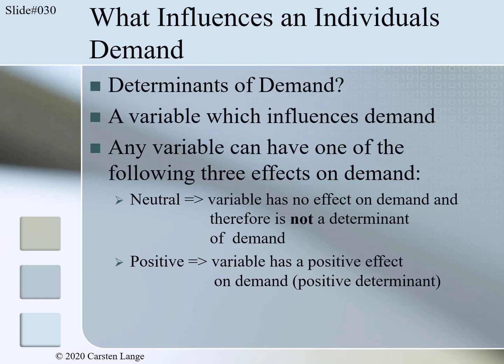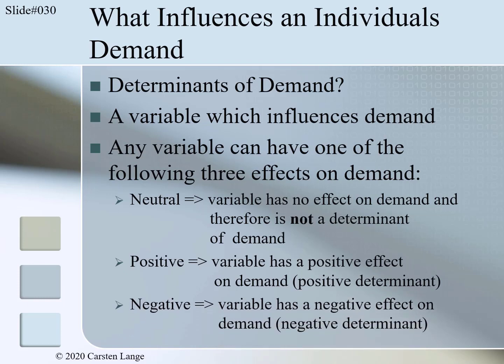If a variable has a negative effect on demand, it is called a negative determinant. The price is a negative determinant for almost all goods. For example, if the price for steak increases, consumers will eat less steak. Please note, the price and demand are moving in opposite directions — therefore it is called a negative effect. The price increases, demand decreases.